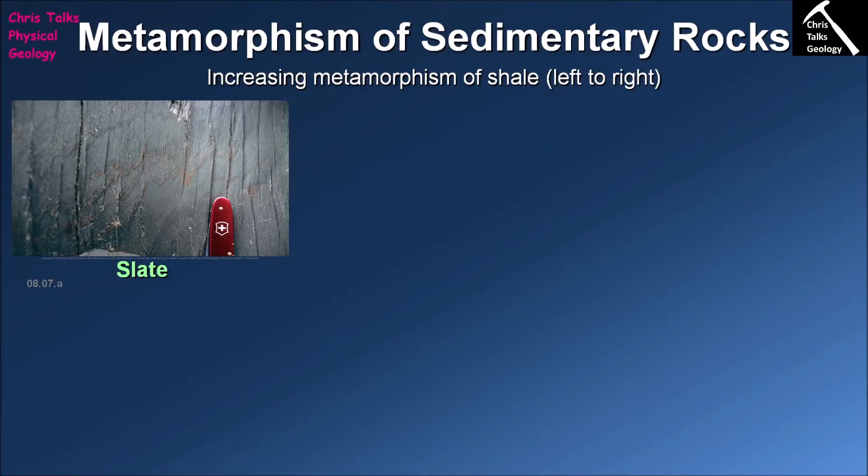Another term I'm going to use over the next couple of slides is the term metamorphic grade. Metamorphic grade simply says how much temperature and pressure has your rock been exposed to. If your metamorphic rock has been exposed to relatively low temperatures and pressures, we'll typically refer to it as a low-grade metamorphic rock.